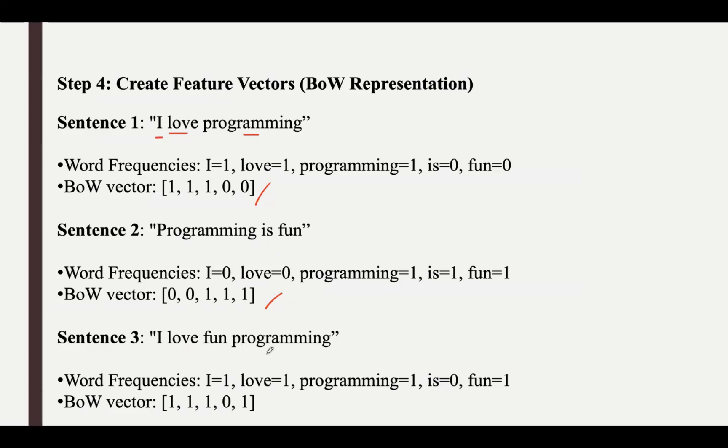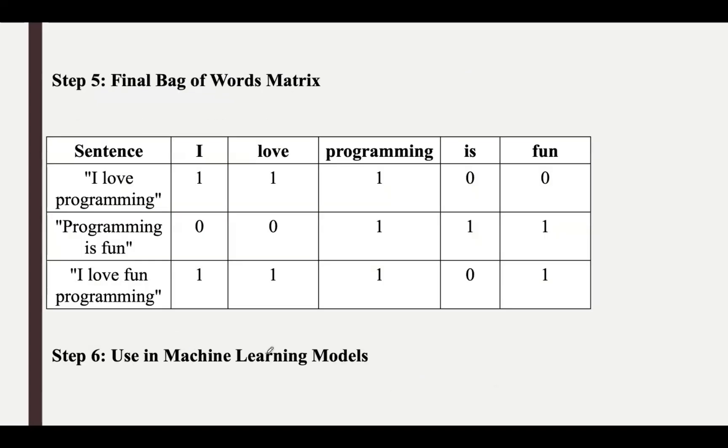In the same way, we do for the third sentence also. The final Bag of Words matrix is where we now have a matrix representing the corpus, where each row corresponds to a sentence and each column corresponds to a word in the vocabulary.